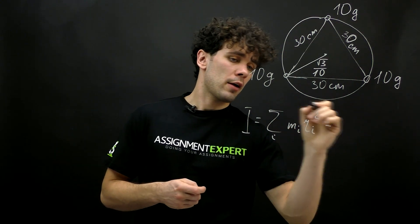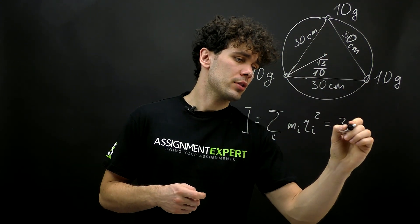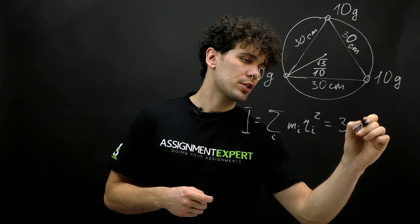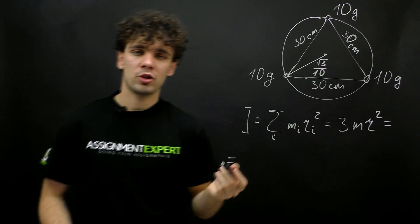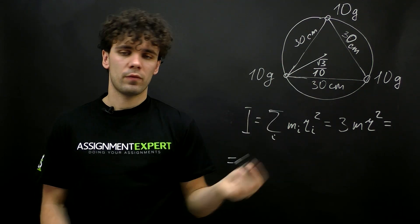In our case, we can simplify this formula because all the masses and distances are the same. We have three particles. Therefore, we get 3 times m times r squared. And now we just need to put our numbers into the formula.